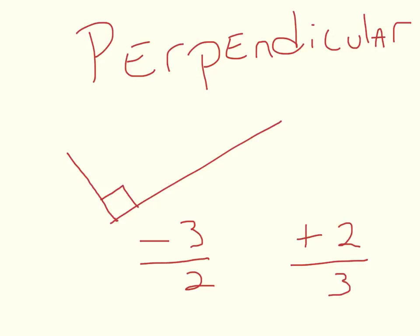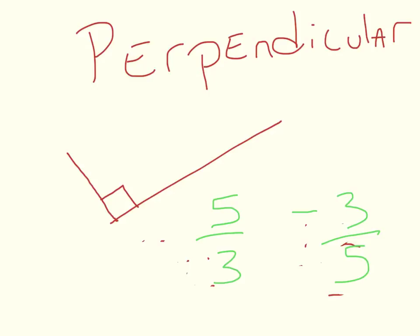So let me make up some other numbers. Let us say we have a slope of five over three. In order for something to be perpendicular to that, its slope has to be negative three over five. So that's what you've got to compare.